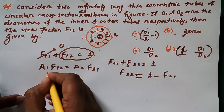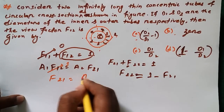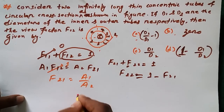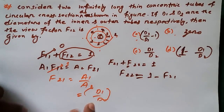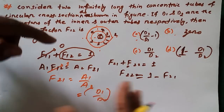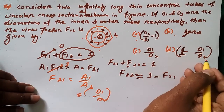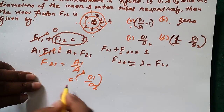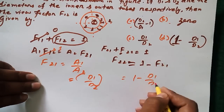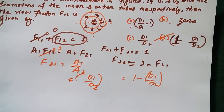Substituting F12 = 1 into the reciprocity formula: A1 · 1 = A2 · F21, so F21 = A1/A2. The areas are proportional to the diameters, so F21 = D1/D2. Therefore: F22 = 1 − D1/D2. The answer matching this is option D. I hope you understand how I solved this question.